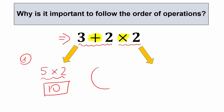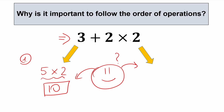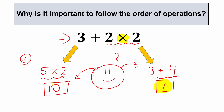Another group of people might think they need to follow the order of operations. They might do multiplication first: 3 times 2 equals 4, and then 3 plus 4 equals 7. And it turns into a big argument — we have two completely different answers: 7 and 10. So which answer is correct?